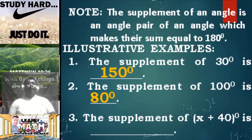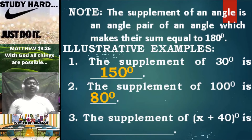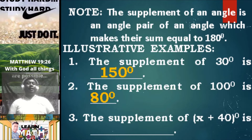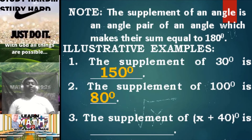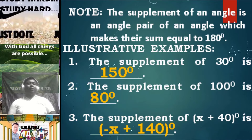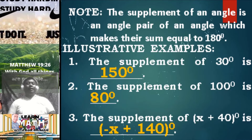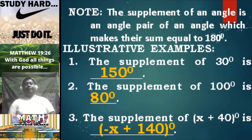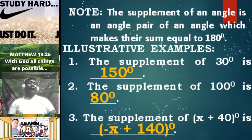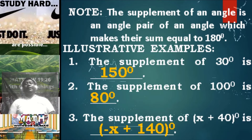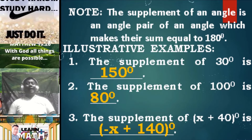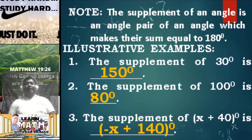Number three, the supplement of the quantity (X + 40) degrees is (-X + 140) degrees, since their sum is just equal to 180 degrees.